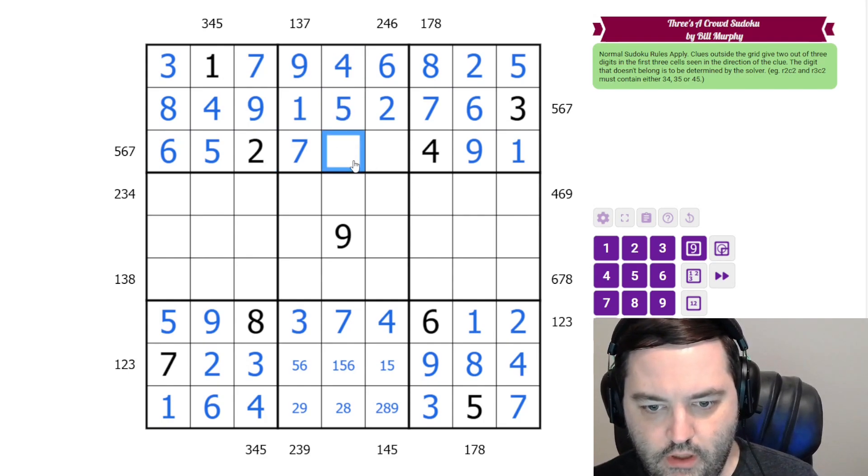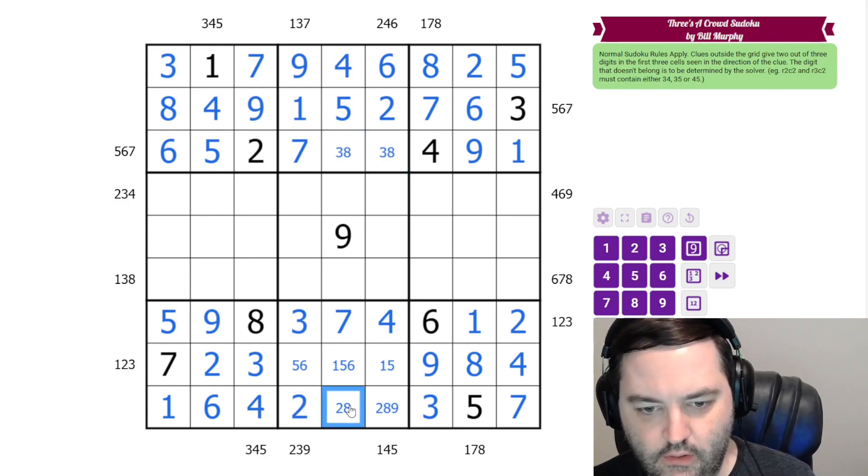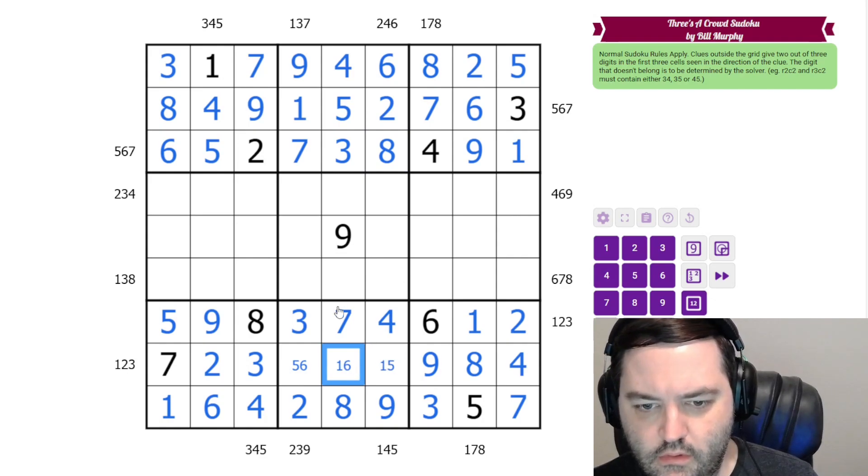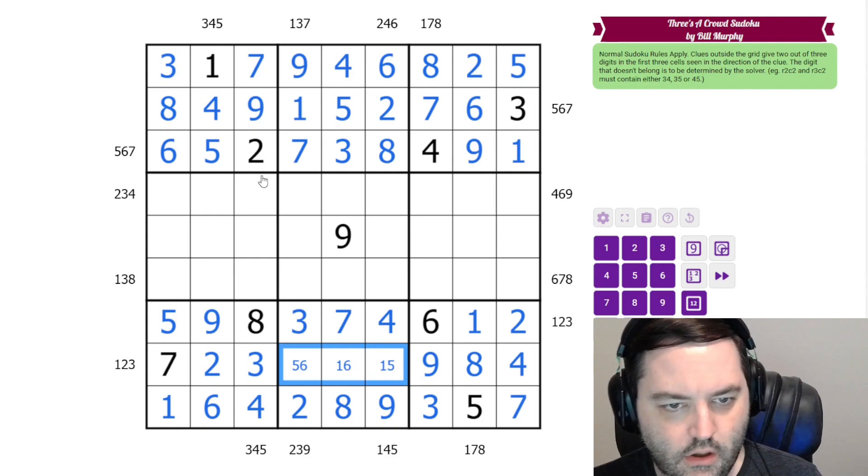And three and eight we can't do yet, but the nine looks down to give us two, eight, nine. That gives us three and eight. And this can't be five.